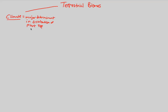Why are we talking about plant species specifically and their distribution based on climate? That's because terrestrial biomes are defined by their vegetation type. Remember, we define biomes as either vegetation type or physical environment. In the case of a terrestrial biome, we look at the plants and base the entire biome's identity off of the plant species that we see.